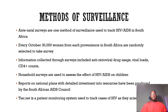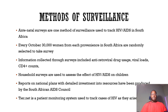Regarding surveillance methods used in South Africa: antenatal surveys are one method used to track HIV and AIDS. Every October, 30,000 women from each province in South Africa are randomly selected to take the survey. Information collected includes antiretroviral drug use, viral loads, and CD4 counts. Antiretroviral drug usage shows whether people with HIV are using their medications as needed, and viral loads and CD4 counts assess how far the virus has progressed in each individual.